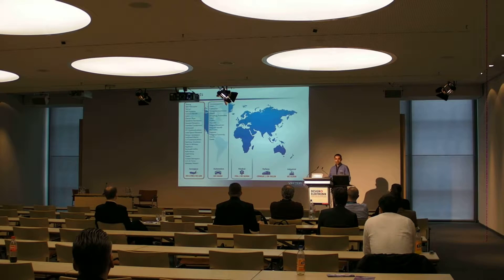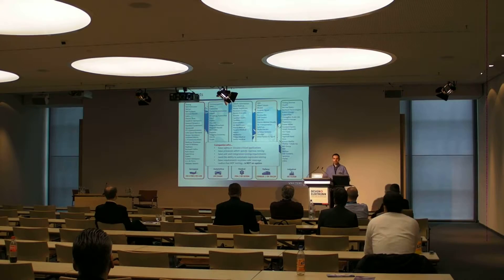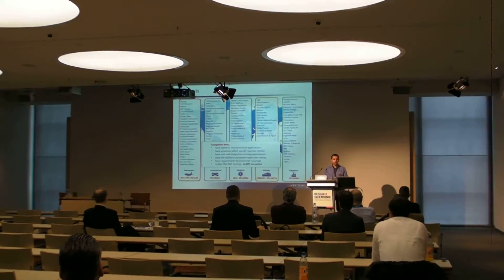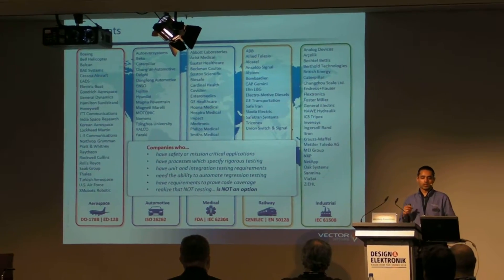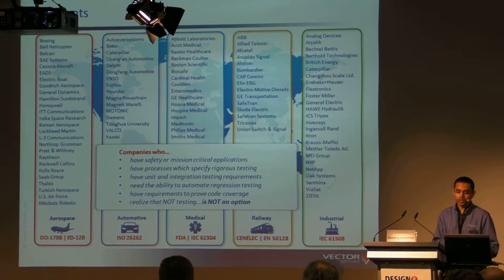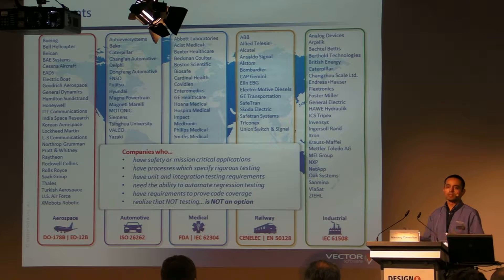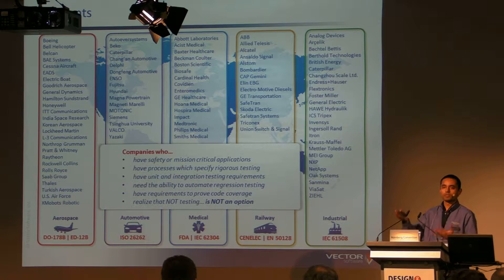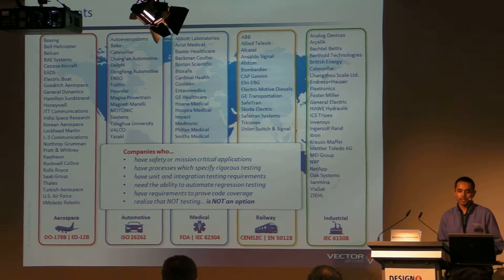We have lots of customers in many different industries. The ones that are interesting in regards to IEC 61508 are companies like Henderson Hauser, we have Zeal, we have Bombardier, who are using standardised General Electric ICS-5, companies like Invensis, who are doing certification of the systems to IEC 61508 at different SIL levels — SIL-1, SIL-2, SIL-3, and so on.